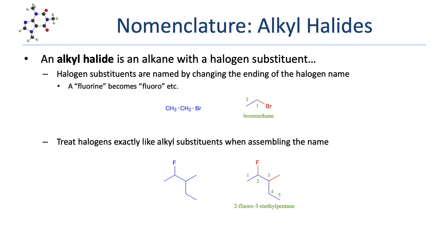The first class of compounds we're going to learn how to name are alkyl halides. An alkyl halide is really just an alkane that has a halogen as a substituent. The halogen substituent itself is named by taking the halogen name, say fluorine, and dropping the -ine and replacing it with an -o. So fluorine becomes fluoro, chlorine becomes chloro, etc. Halogen groups are treated exactly like alkyl groups.